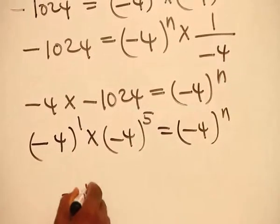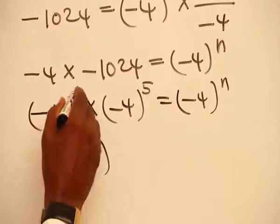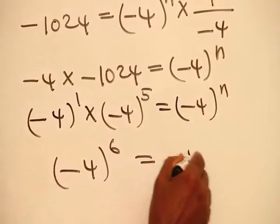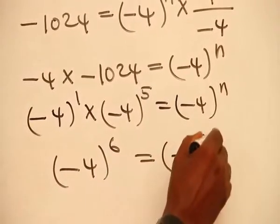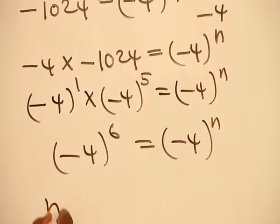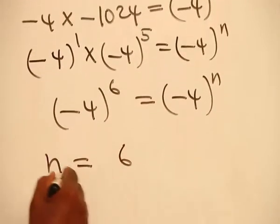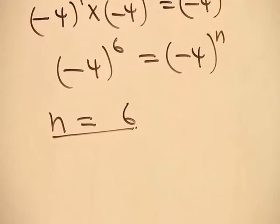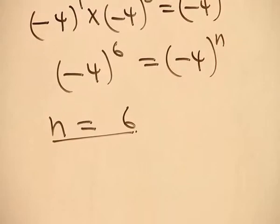And this visually is minus 4, 1 plus 5 is 6. And then this is minus 4 raised to the power n. By the powers of indices, our n is equal to 6, which is what we are asked to find. And that is the solution to that problem.